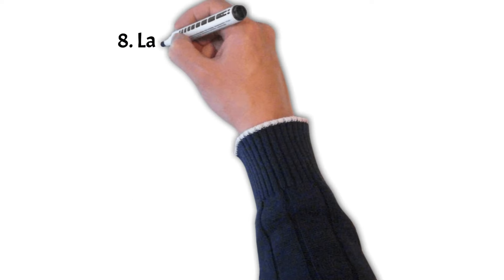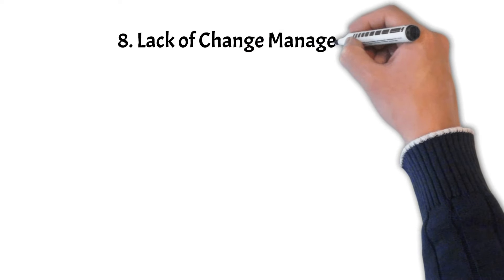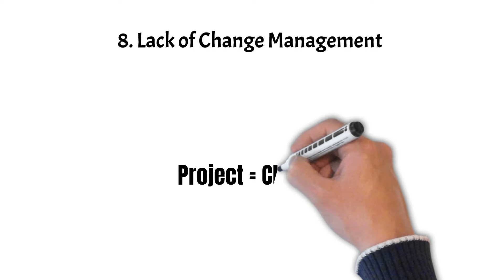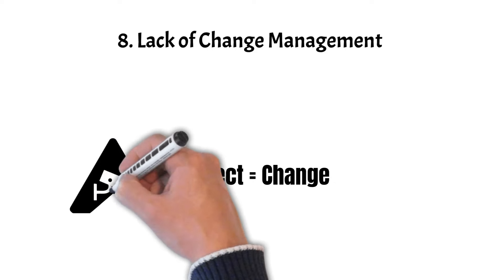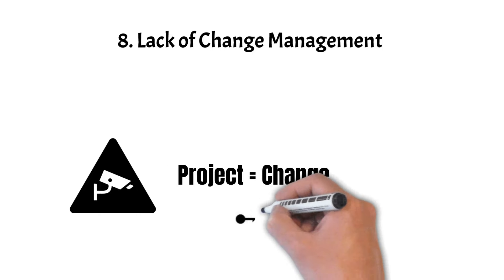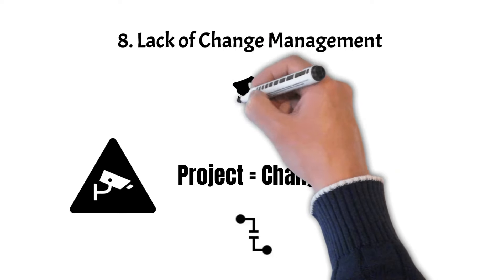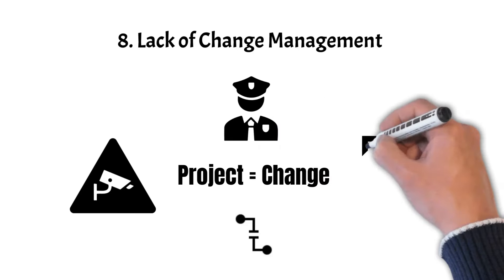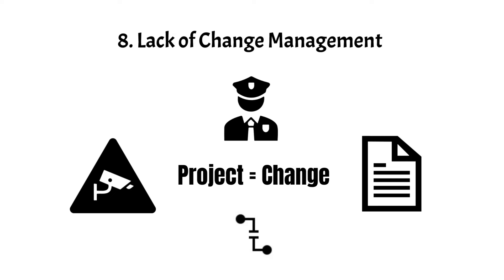Pitfall 8: Lack of change management. Change is a constant in any project, and failing to manage it effectively can create resistance and hinder progress. When changes are not addressed proactively, they can disrupt workflows, reduce productivity, and even lead to project failure. To navigate change successfully, create a change management plan that outlines how changes will be identified, communicated, and implemented. Engage stakeholders early in the process and provide support to ease the transition.